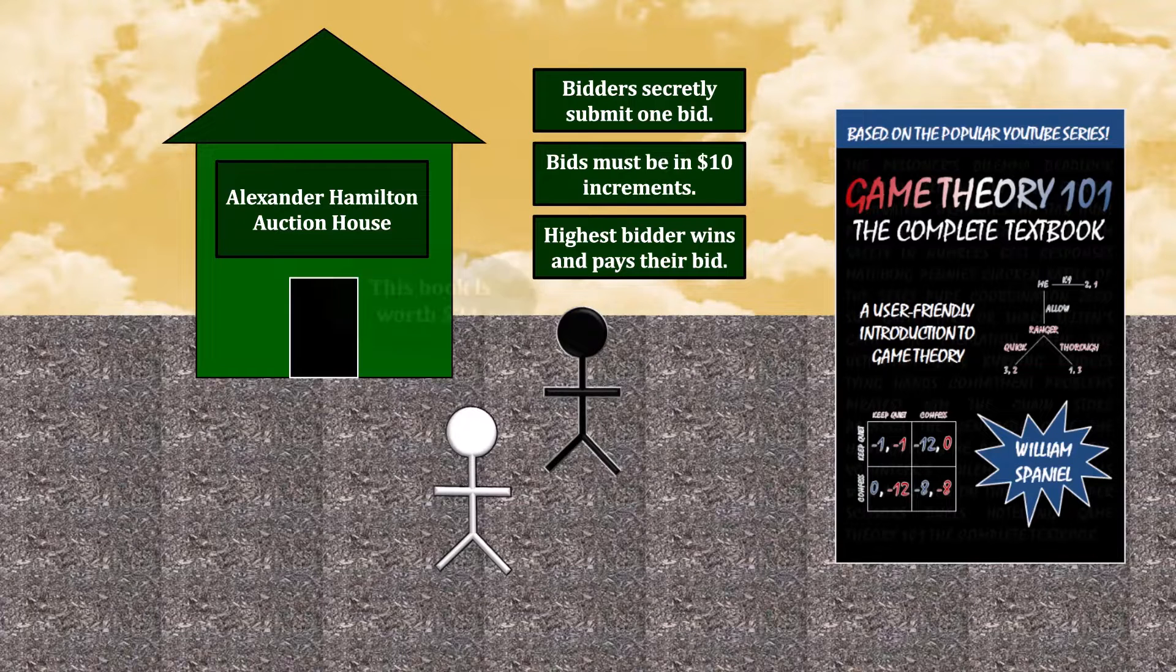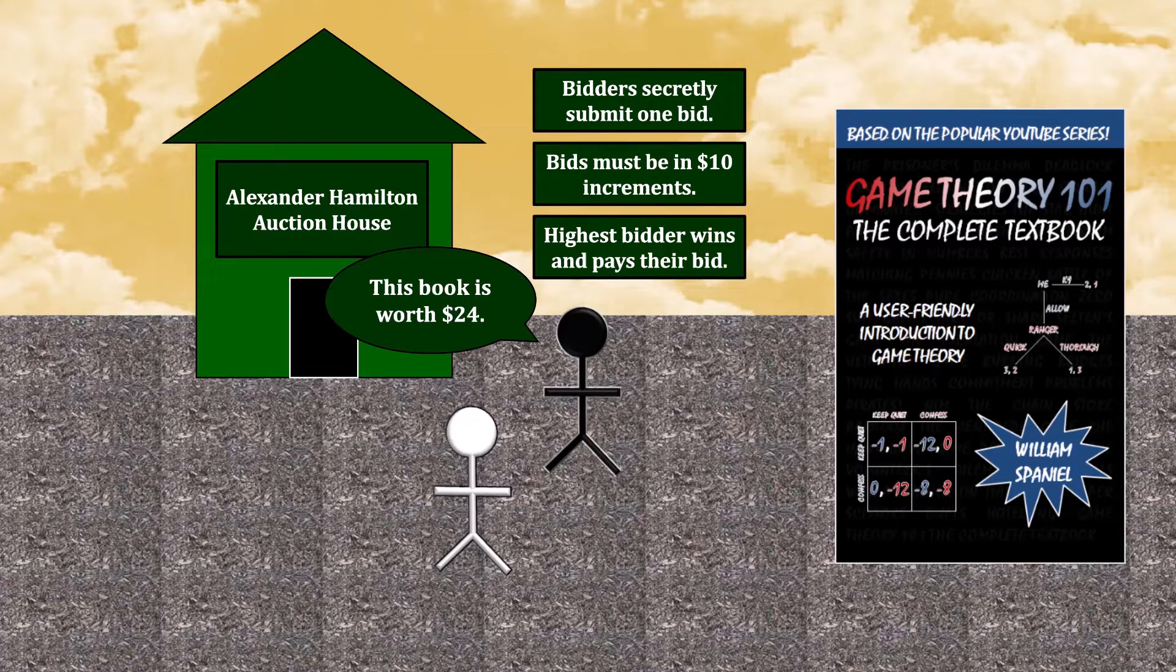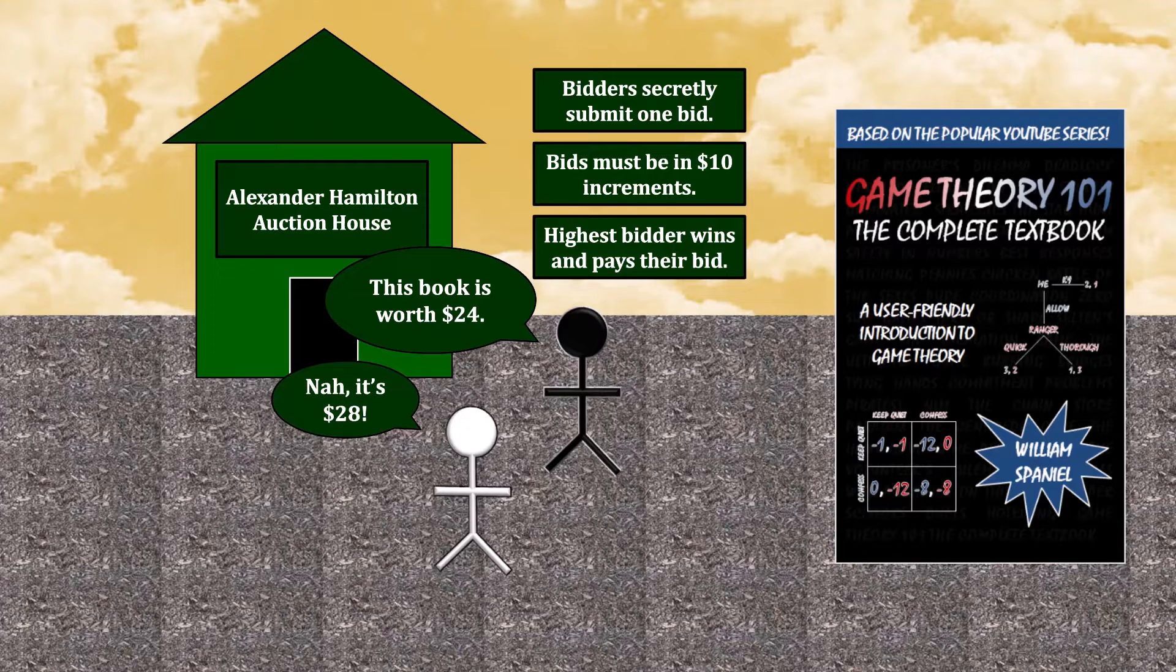The stranger believes that the personal value of the book to him is $24. But you, being a more enlightened individual, find it to be worth $28. These valuations are commonly known.